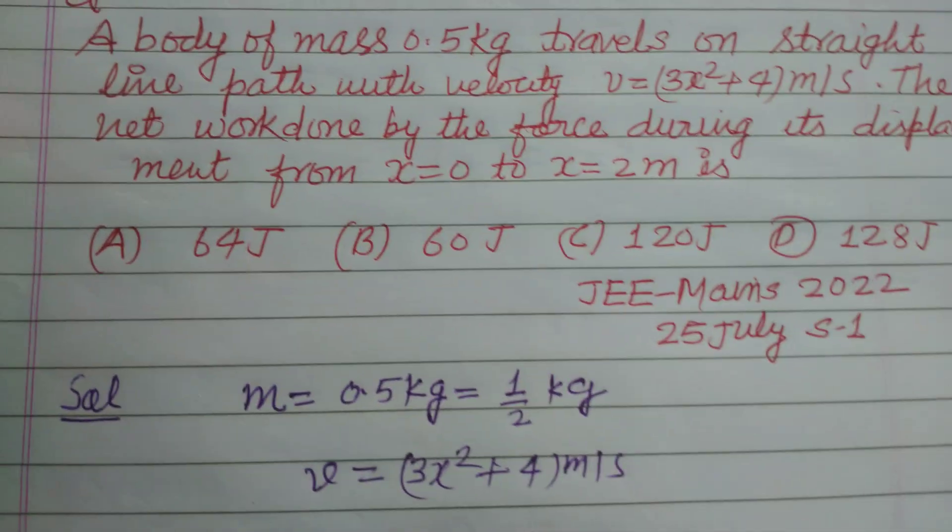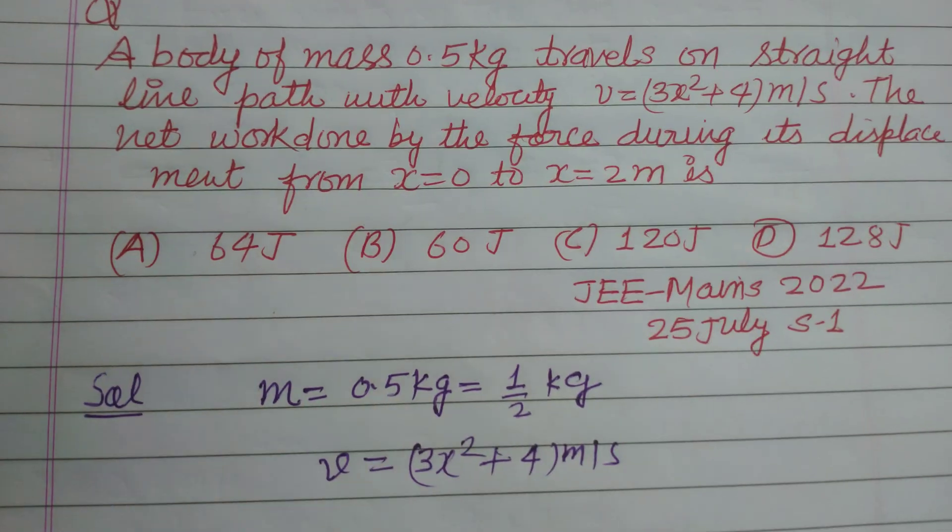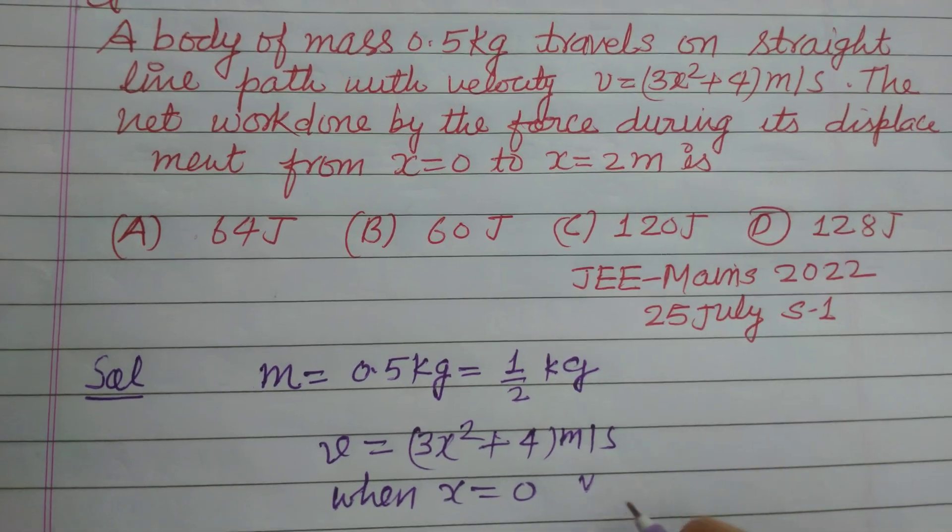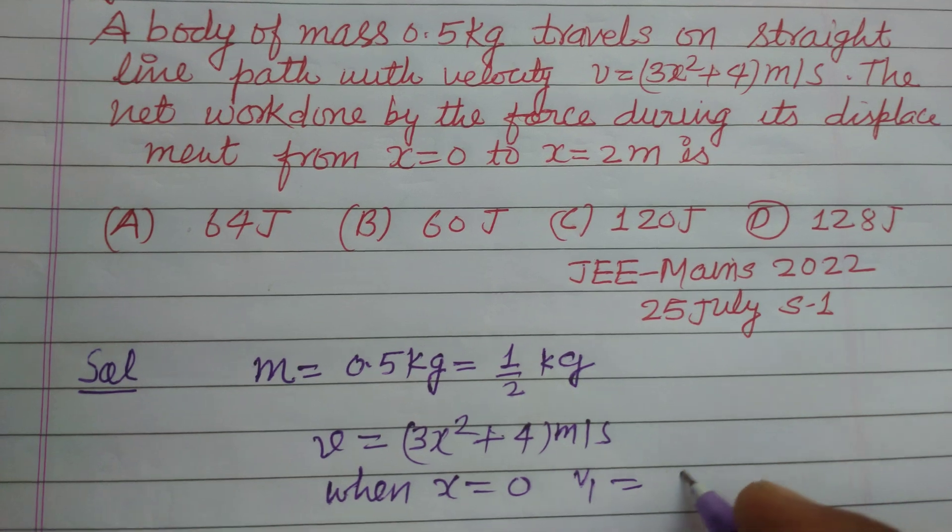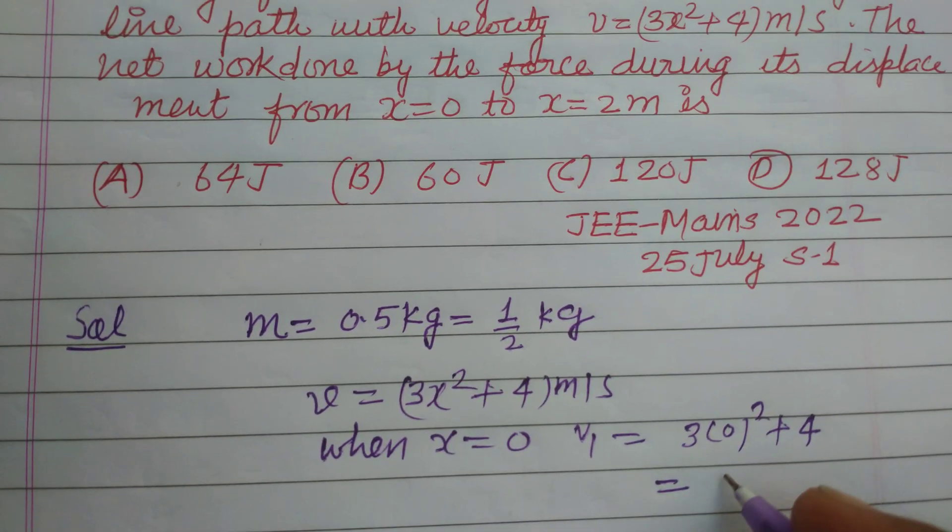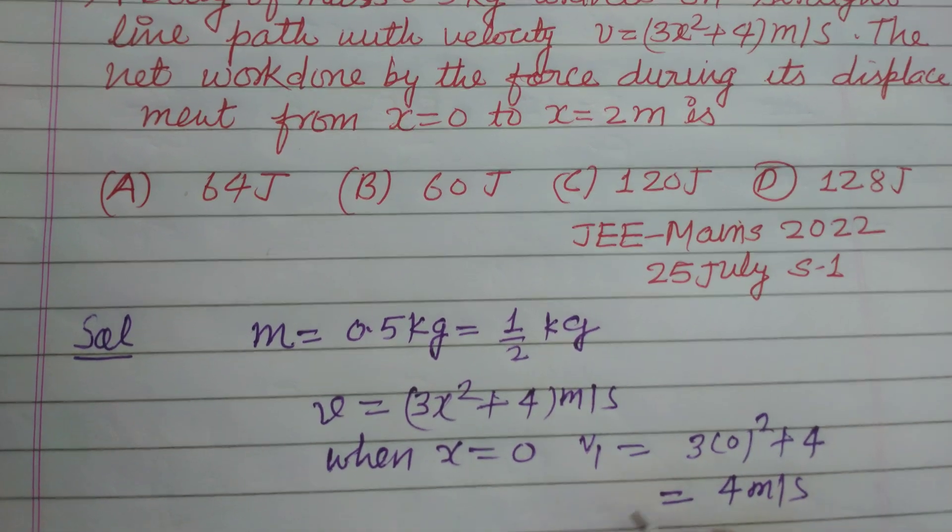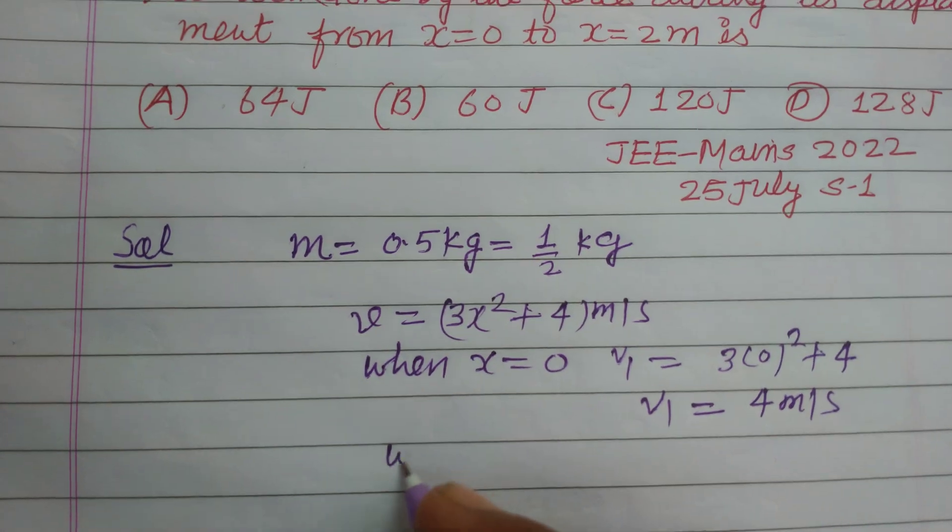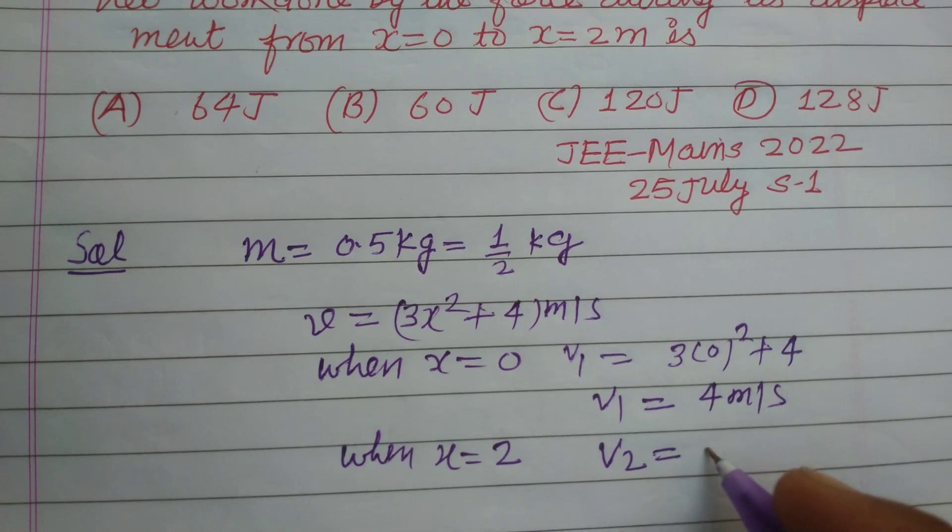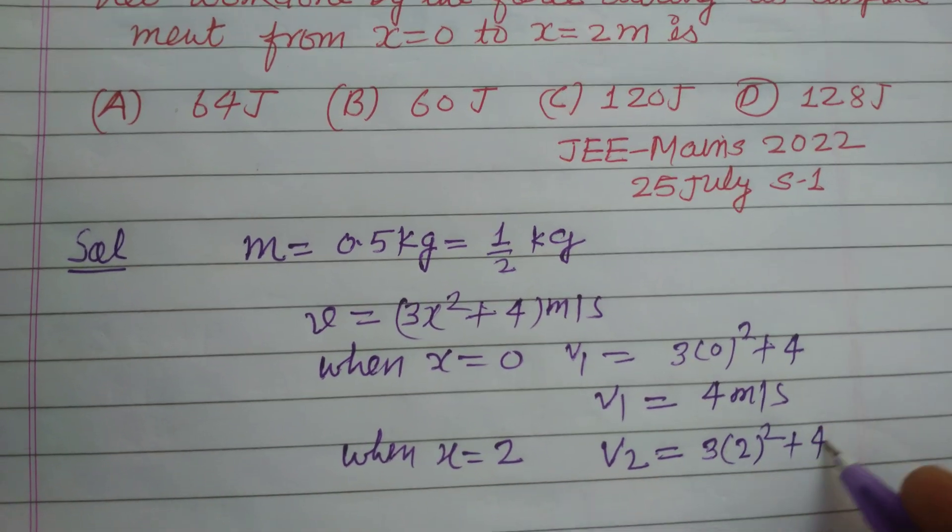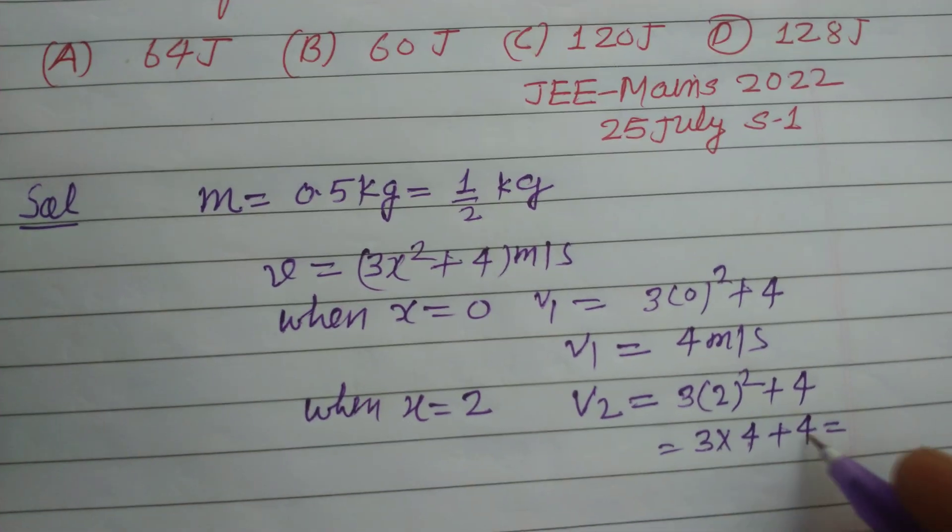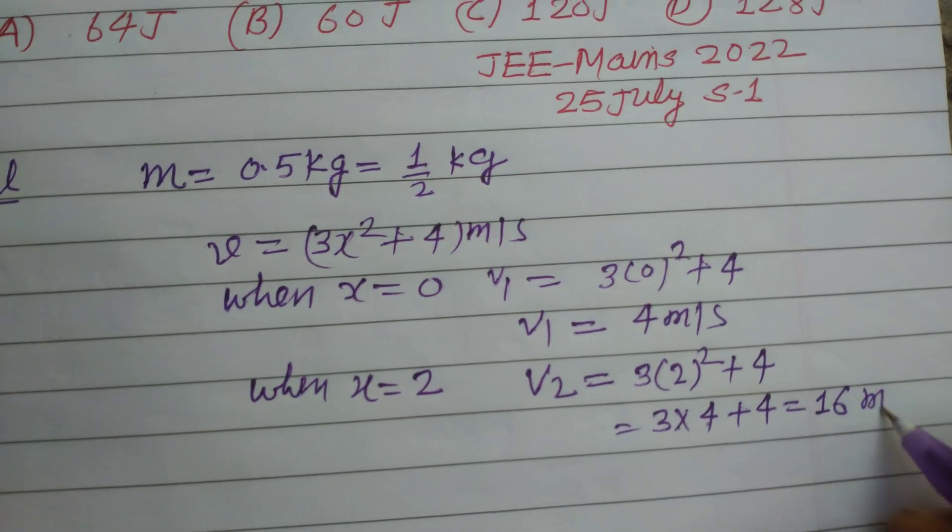So here velocity when x equal to 0, velocity is v1. So this is 3 times 0 square plus 4, so initial velocity is 4 meters per second, v1. When x equal to 2, velocity v2 equal to 3 times 2 square plus 4, this is 3 times 4 plus 4, which is 16 meters per second.